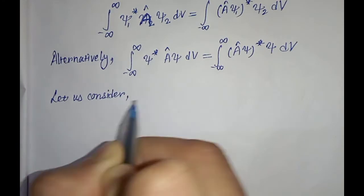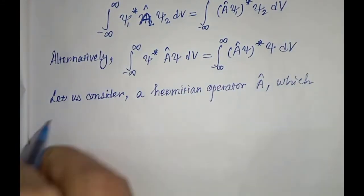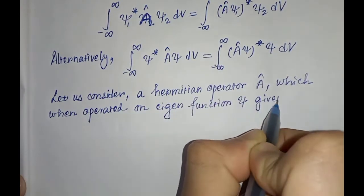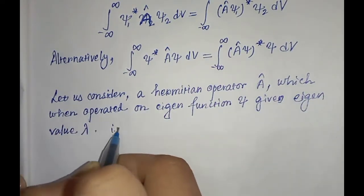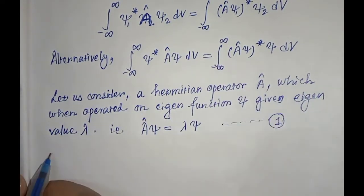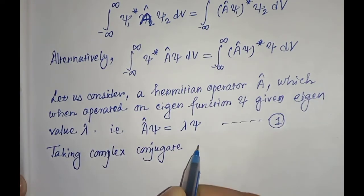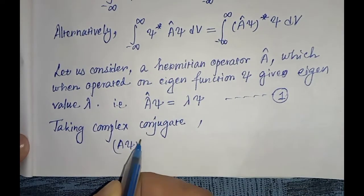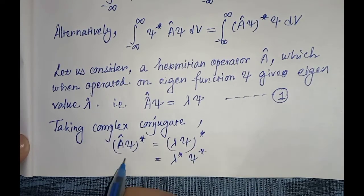Let us consider a Hermitian operator A which, when operated on eigenfunction ψ, gives eigenvalue λ — that is, Aψ = λψ. This is equation one. Taking the complex conjugate on both sides, we get (Aψ)* = λ*ψ*. This is equation two.